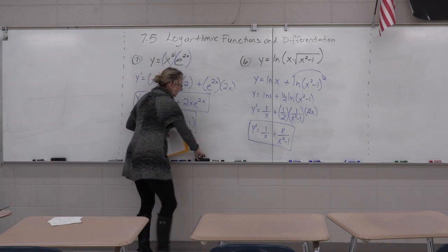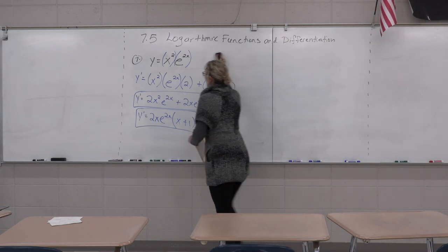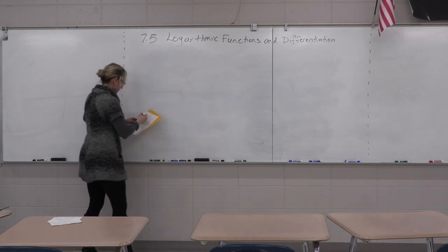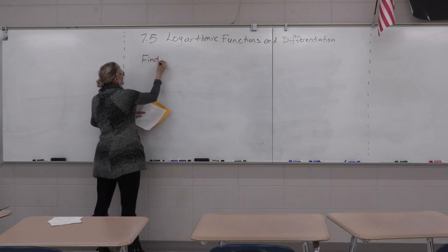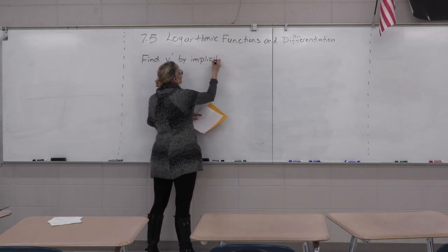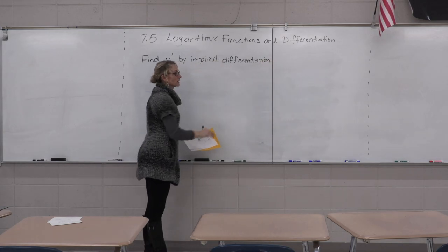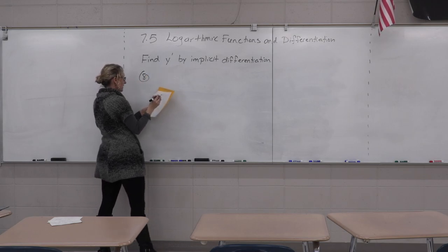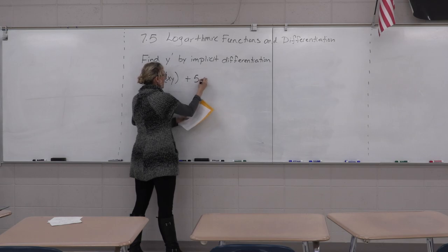Now let's talk about implicit differentiation. We're still finding y prime, but x's and y's are jumbled up together. Every time there's a y, we say times y prime. These examples are not y equals x — x's and y's are mixed. Number eight: the natural log of x times y plus five x equals thirty.